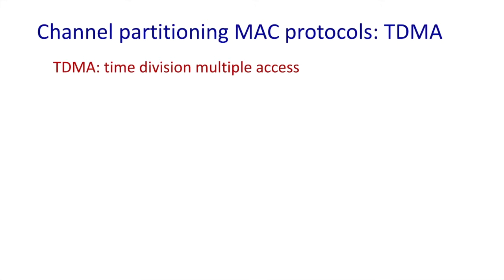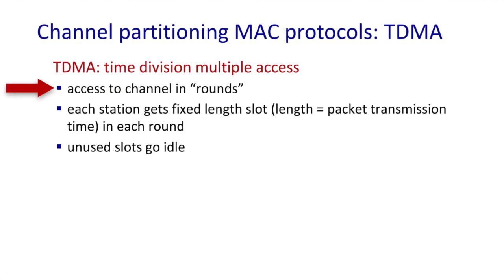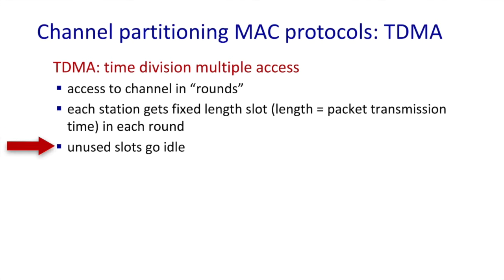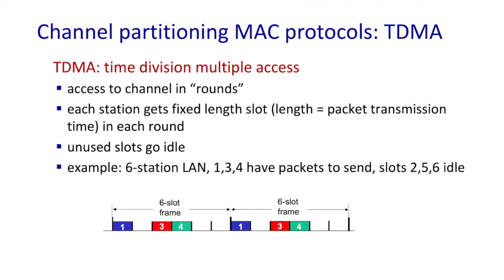We're going to look at two channel partitioning MAC protocols: time division multiple access and frequency division multiple access. Let's look at TDMA first. In TDMA, access to the channel is divided up into rounds, and each round is further divided into slots. Each node is allocated one or more slots within a round. If slots are unused or unassigned, they're going to go idle. In this example of a six-station LAN, stations 1, 3, and 4 have packets to send, and they do so in their assigned slots, while slots 2, 5, and 6 go idle.